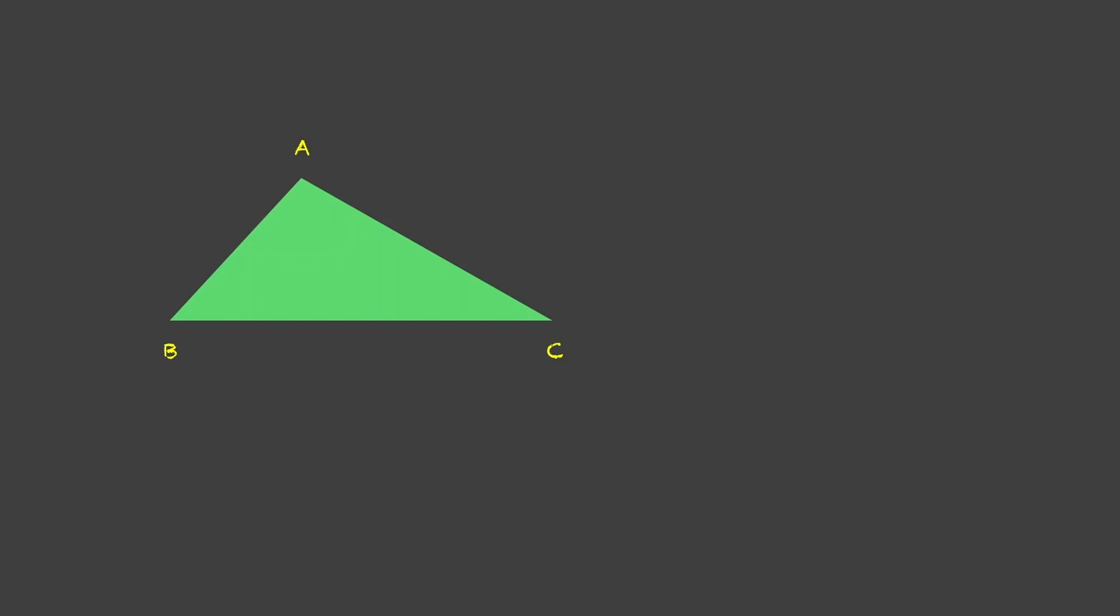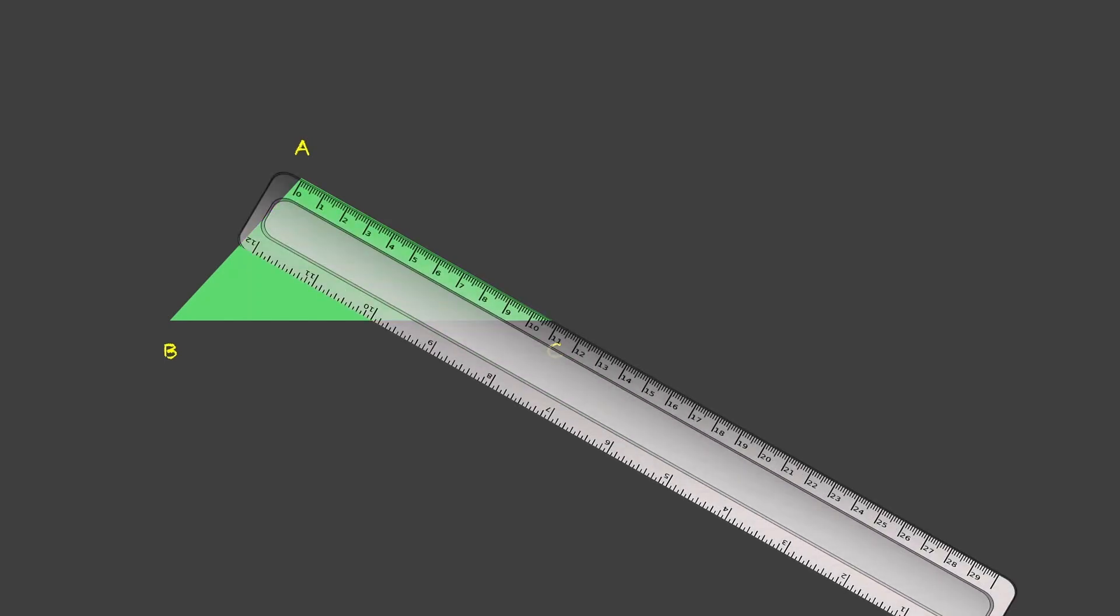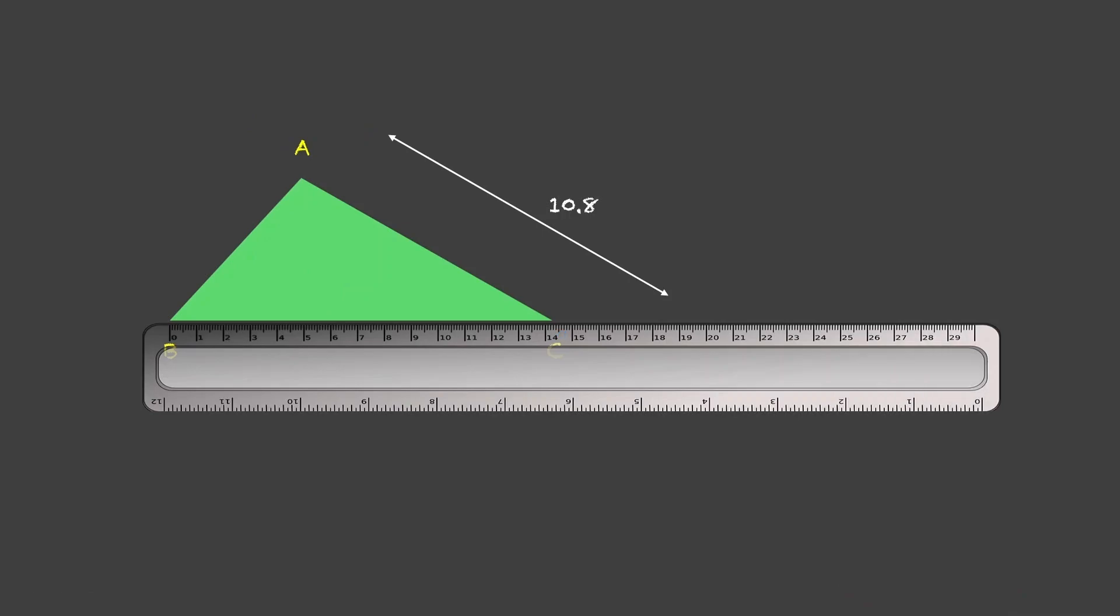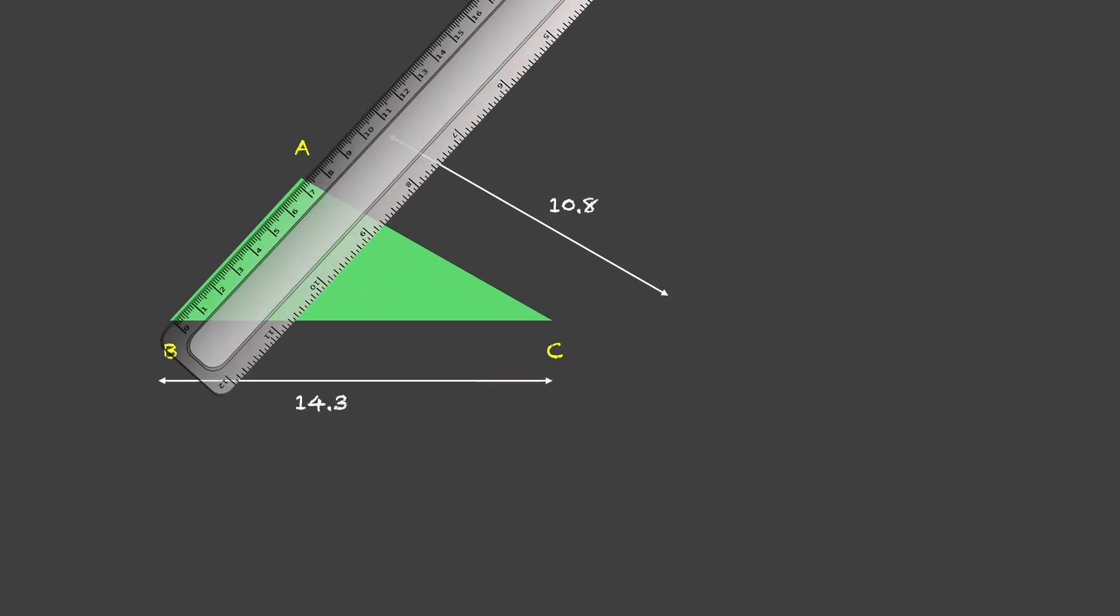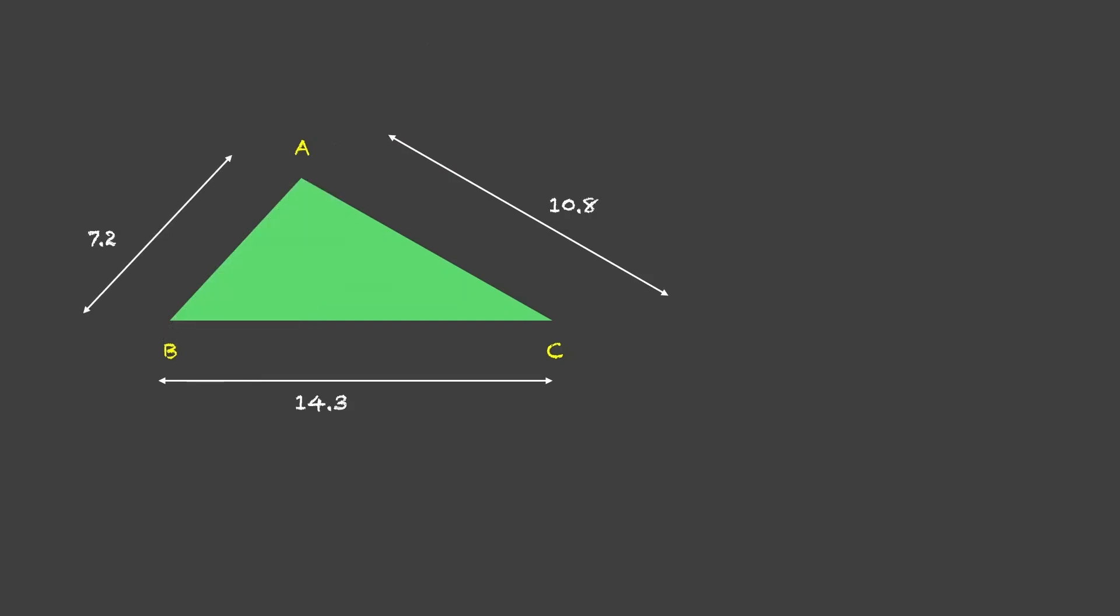We are going to measure all the sides of ABC. So we have AC which is equal to 10.8, over here BC is 14.3 and AB is 7.2.